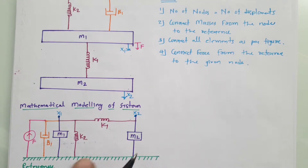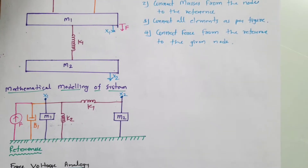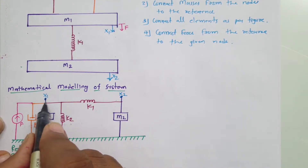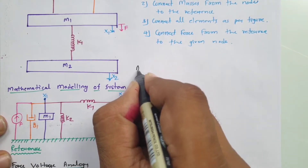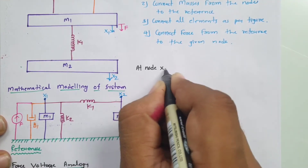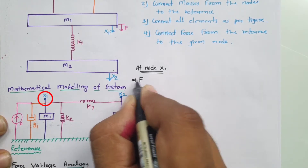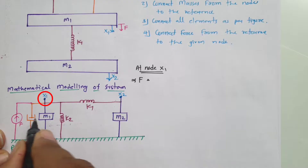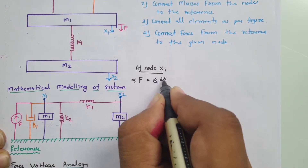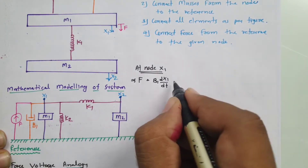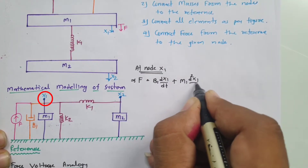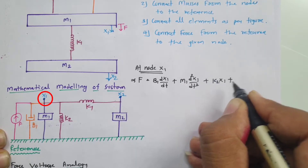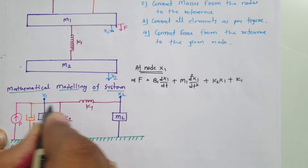Now we have done the mathematical modeling and we can derive equations. There are two nodes, giving two equations. At node x1, incoming force f equals the outgoing force distributed across b1, m1, k2, and k1: f = b1(dx1/dt) + m1(d²x1/dt²) + k2·x1 + k1(x1 - x2).